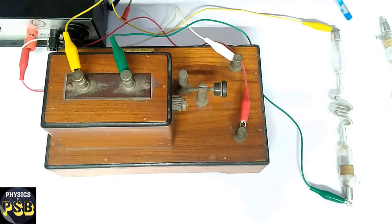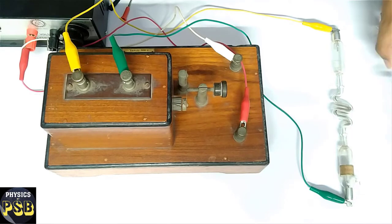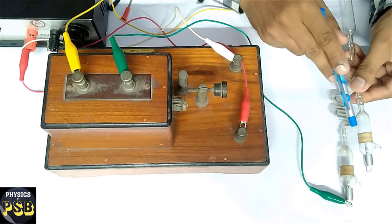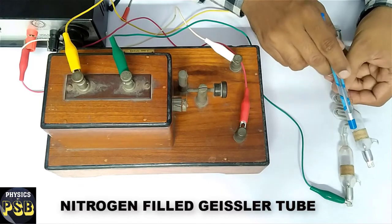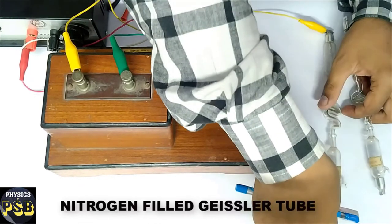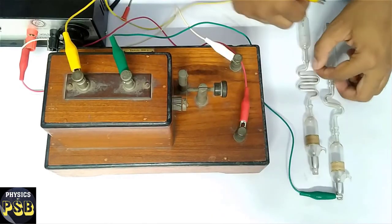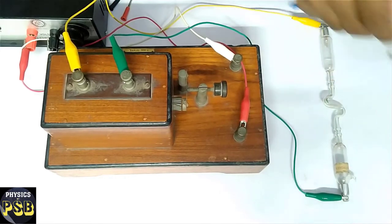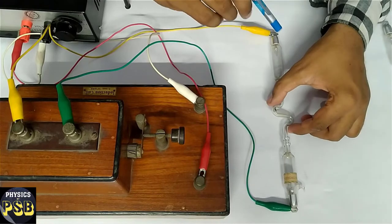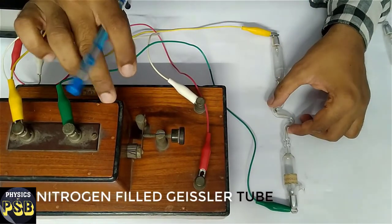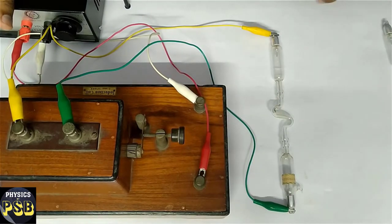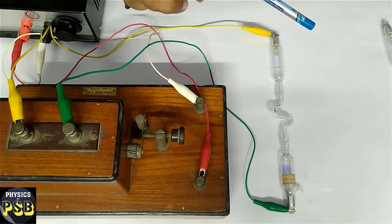Now I will replace this Gieseler tube with another Gieseler tube which is filled with nitrogen gas. I will disconnect this and connect the nitrogen tube. I have connected the Gieseler tube filled with nitrogen gas to the secondary of the induction coil. Now I will pass current and show you how the gas discharges.